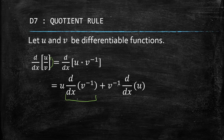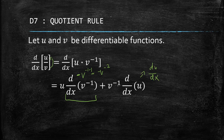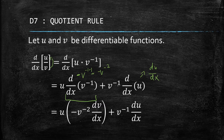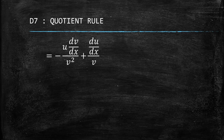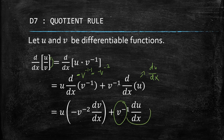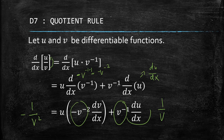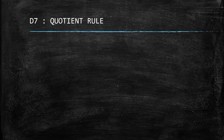The derivative of v to the negative one is negative v to the power of negative two, while the other term just gives du/dx. Transferring v back to the denominator, we now have v squared in the denominator and v in the numerator. This part here is actually one over v, and this is negative one over v squared. So we have u times dv/dx, and du/dx, with the negative sign accounted for.